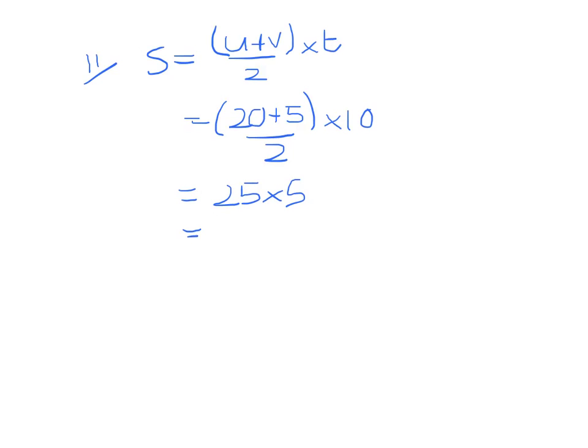Part 2 is the distance travelled, and I'm going to use u plus v over 2 times t. So that is 20 plus 5 over 2 times 10, 25 times 5, 125 meters.